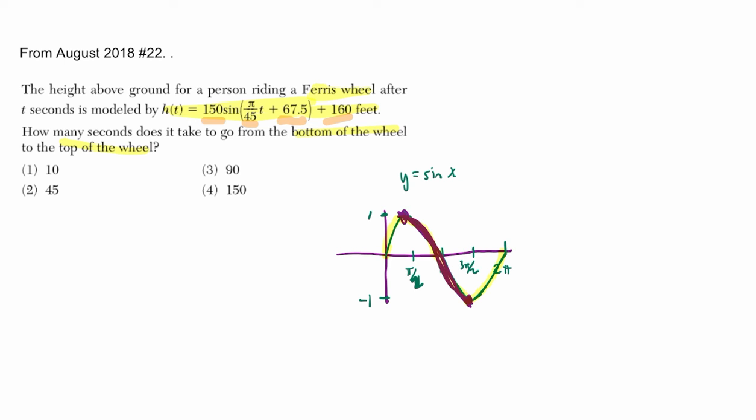So this quarter plus this quarter, a quarter plus a quarter is half. It's half of the sine wave. It's half of the period. So whatever the answer is, it has to be one half of the period.